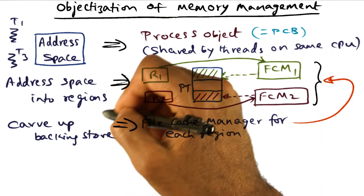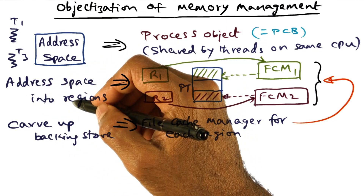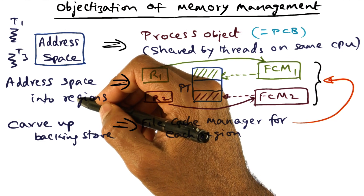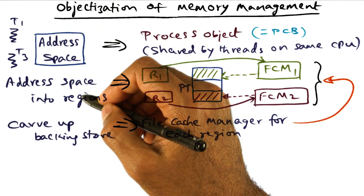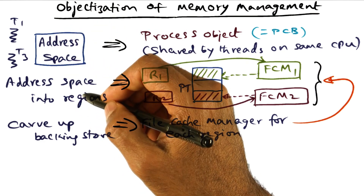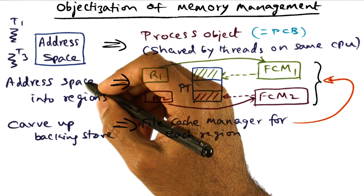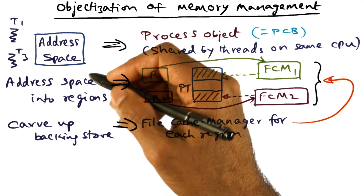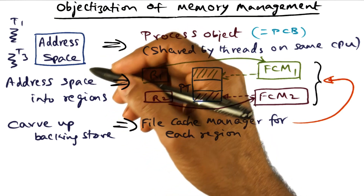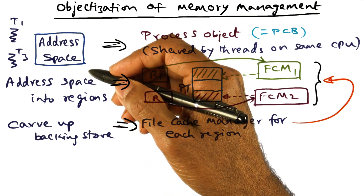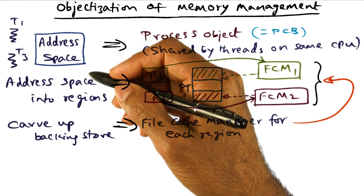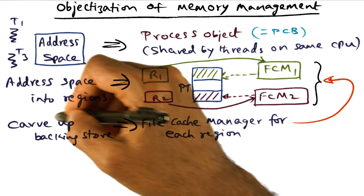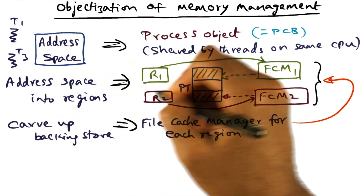What we want to do is take this address space — remember that I mentioned I don't want a centralized data structure that describes the address space. Because intuitively, if you think about a multi-threaded application, the different threads may be accessing different portions of the address space, and therefore there is no reason to have a centralized data structure in the operating system to describe the entire address space of that process. So what we're going to do is take the address space and break it into regions.